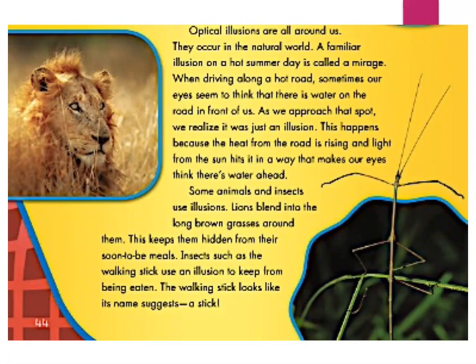Some animals and insects use illusions. Lions blend into long brown grass around them — this keeps them hidden from their prey. Insects such as the walking stick use an illusion to keep from being eaten. They are the prey. The walking stick looks like its name suggests — a stick. In this paragraph, I hear more details about how these animals have blended in or camouflaged into their natural environment, either to be the predator or to help not be the prey. The visuals on the page help me understand that and explain the mysteries and puzzles in the natural world.